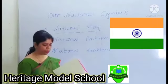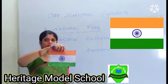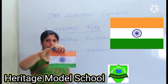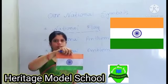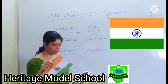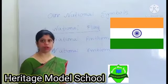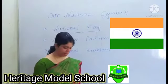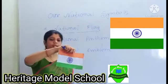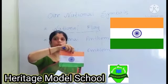This tricolor flag — why is it called tricolor? Because in this flag there are three colors: saffron on the top, white in the middle, and green at the bottom. This flag was hoisted for the first time at Red Fort on 15th August 1947, when India became free from the British, marking the beginning of a new era.